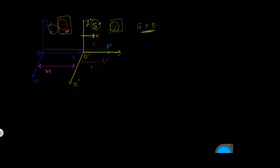We'll be discussing Galilean transformation equations. Those symbols are clocks. We have two 3D systems with built-in clocks: system S and system S'. S' is moving at a velocity V with respect to system S, but it has no acceleration, so the acceleration of S' equals zero, equals the acceleration of S. This is an inertial frame of reference. S' is moving with velocity V.